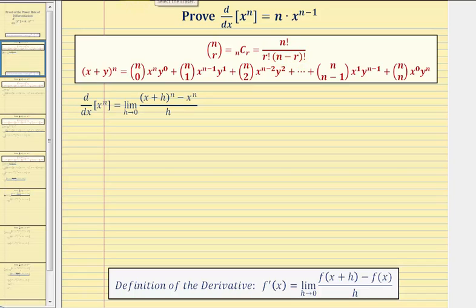So if we begin with the function f of x equals x to the nth, by the definition of the derivative, f prime of x is going to be equal to the limit as h approaches zero of f of the quantity x plus h, which in our case would be the quantity x plus h raised to the nth.